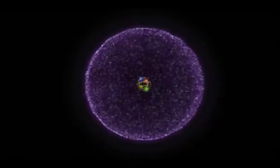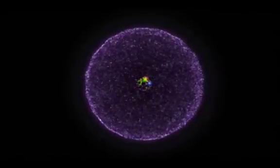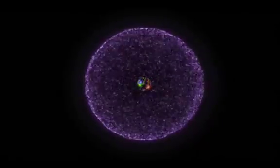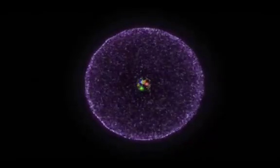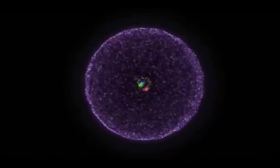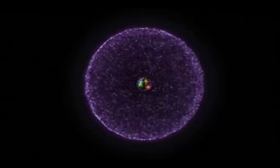The electron occupies a cloud instead of an orbit, but it spends most of its time at the radius predicted as an orbit by the Bohr model. It also spends most of its time possessing the energy that an electron in that orbit would have.